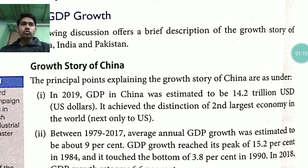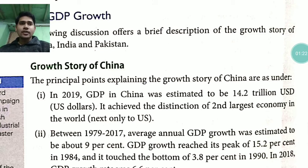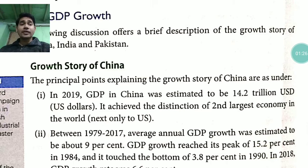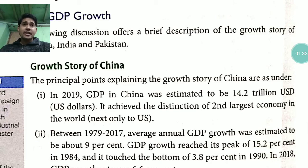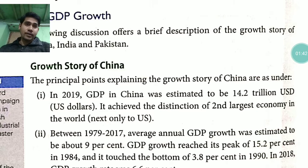In 2019, GDP in China was estimated to be 14.2 trillion USD. China's 2019 GDP of 14.2 trillion is very high in comparison to India and Pakistan. It has achieved the distinction of being the second largest economy in the world — a very large economy.